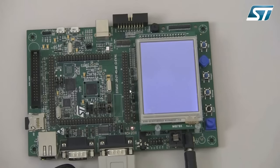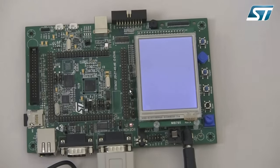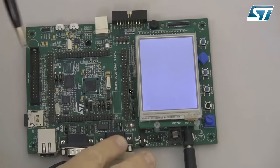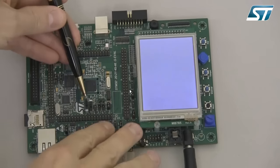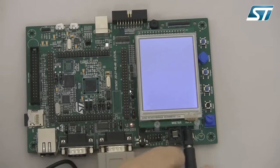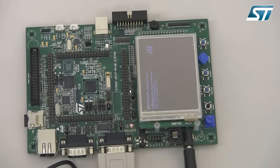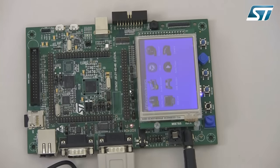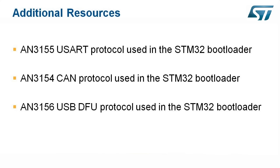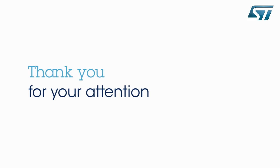I now set the boot pins on the STM32 to boot from the user flash by setting the boot0 pin to low. Pressing the reset button will invoke the user image stored in the flash, running the evaluation board program. For additional information on running the embedded bootloader with the USART, CAN, and USB serial protocols, please refer to application notes AN-3154, AN-3155, and AN-3156. Thank you.